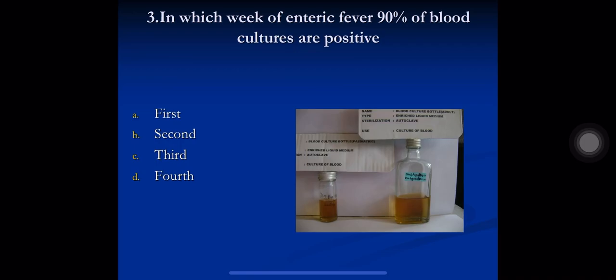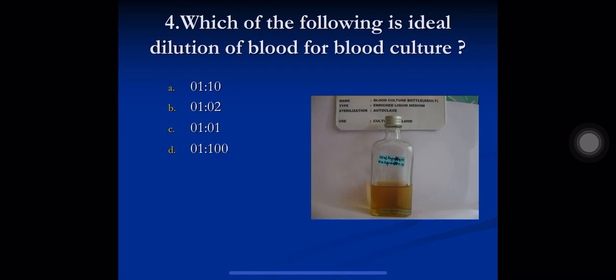Question 3: in which week of enteric fever are 90% of blood cultures positive? A) First, B) Second, C) Third, D) Fourth. Blood culture positivity is maximum at the beginning of enteric fever, and then gradually decreases over time. About 90% of blood cultures are positive during the first week, giving maximum yield. The correct option is A) first week.